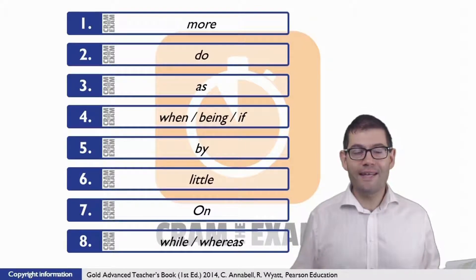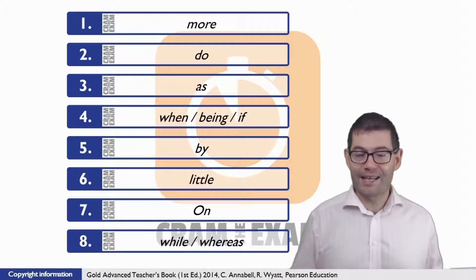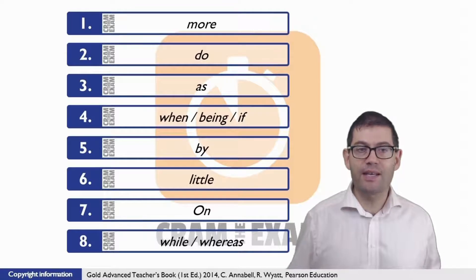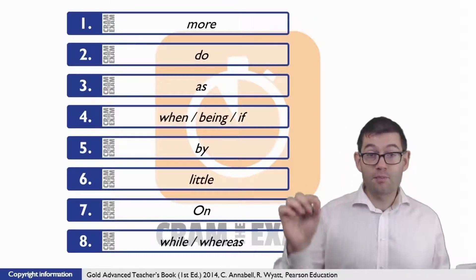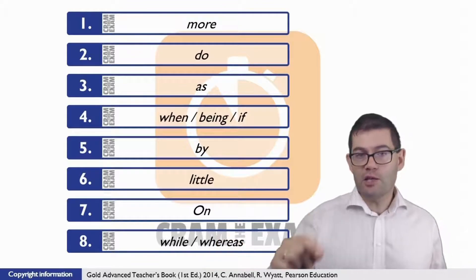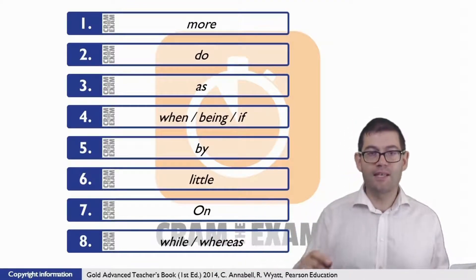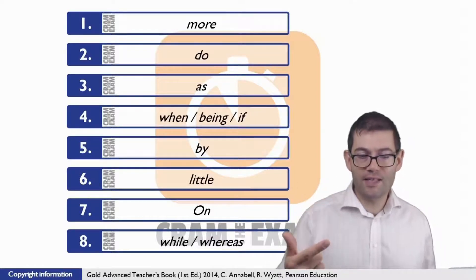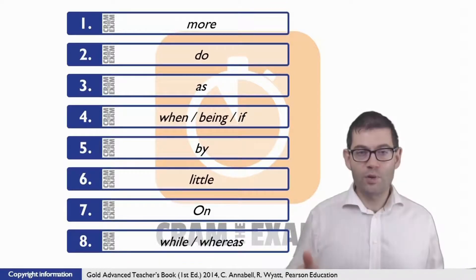Question number five, what we need here is the preposition which collocates with the verb before the gap: react. You react instinctively. Of course the preposition that we need is 'by'. And the reason why we need 'by' is because of what follows. Normally you react to a situation, but here what follows the gap is the way that we behave, a behavior of some kind, so you react instinctively by smiling.